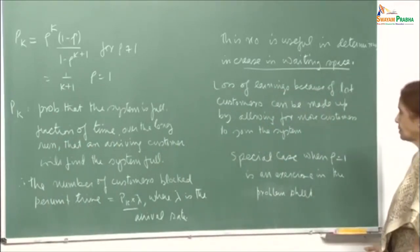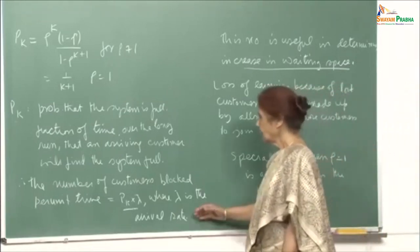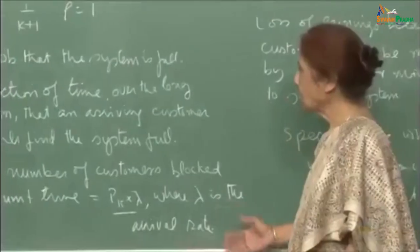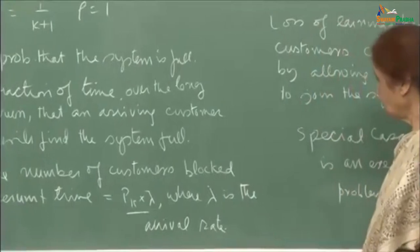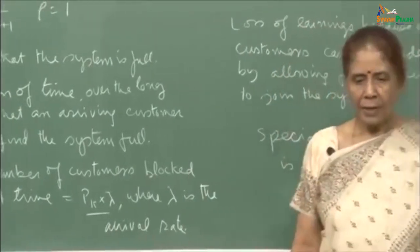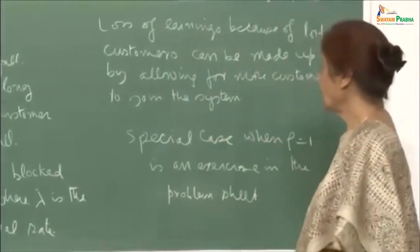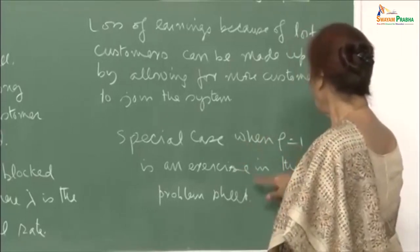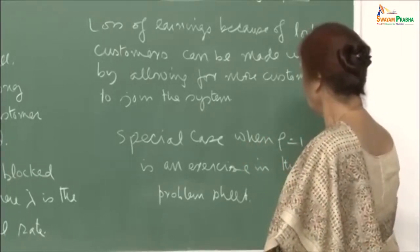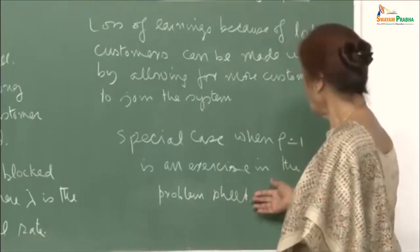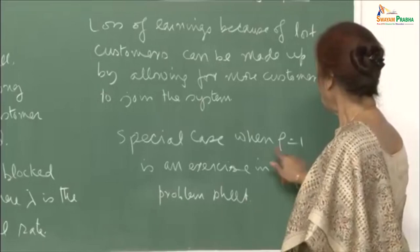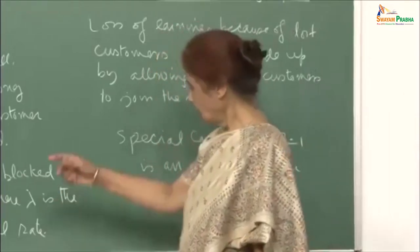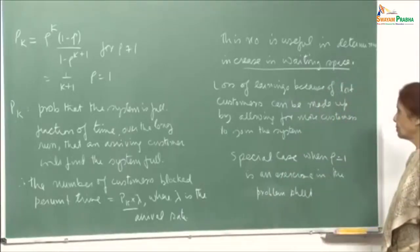Therefore, one can comfortably come to a decision: if the lost customers number is large, you would certainly consider increasing your waiting space and allowing more people to be serviced. These are really useful models and the management or concerned people can use them as guidelines — not going by exact numbers, but they can be very good guidelines.